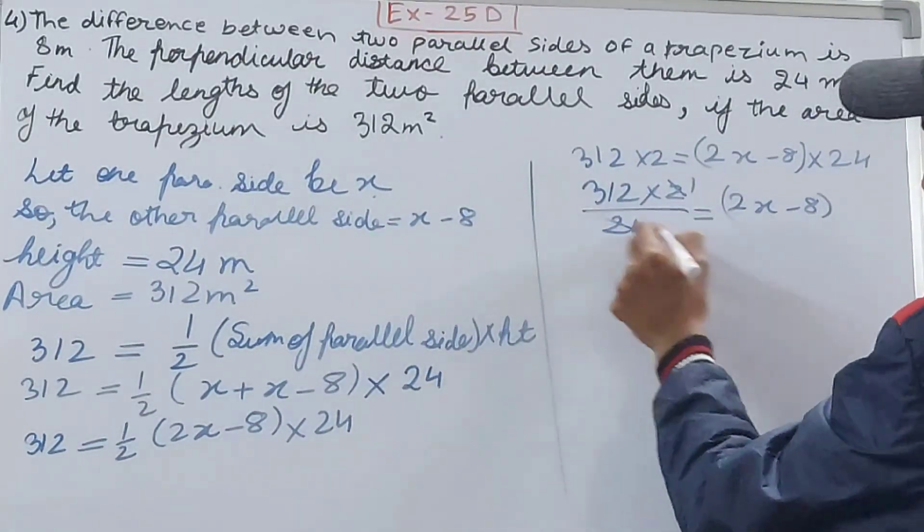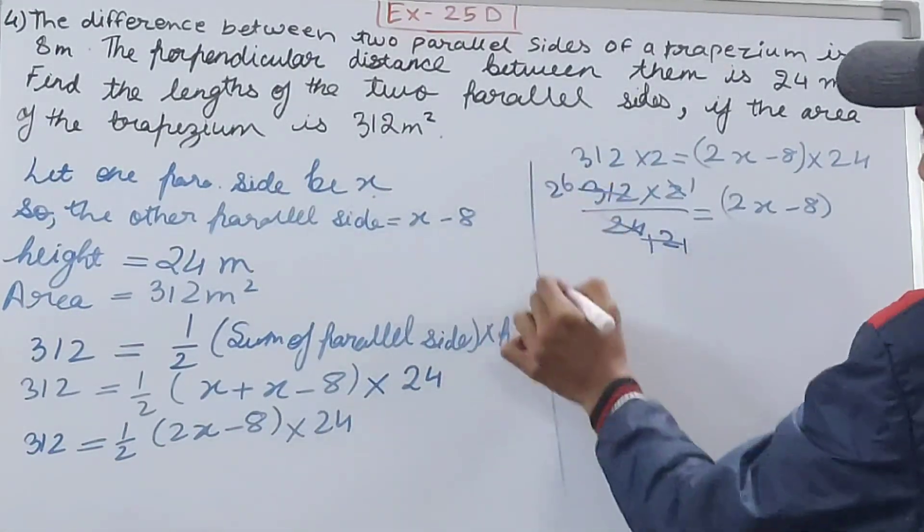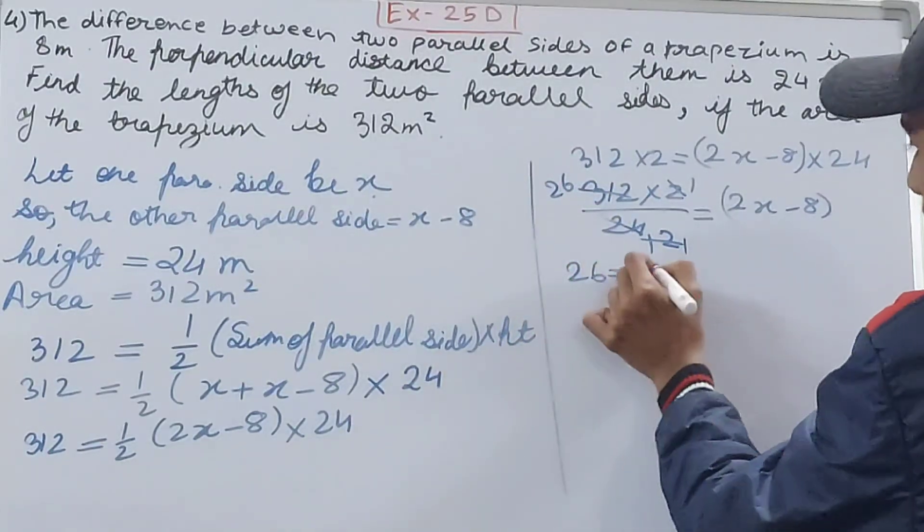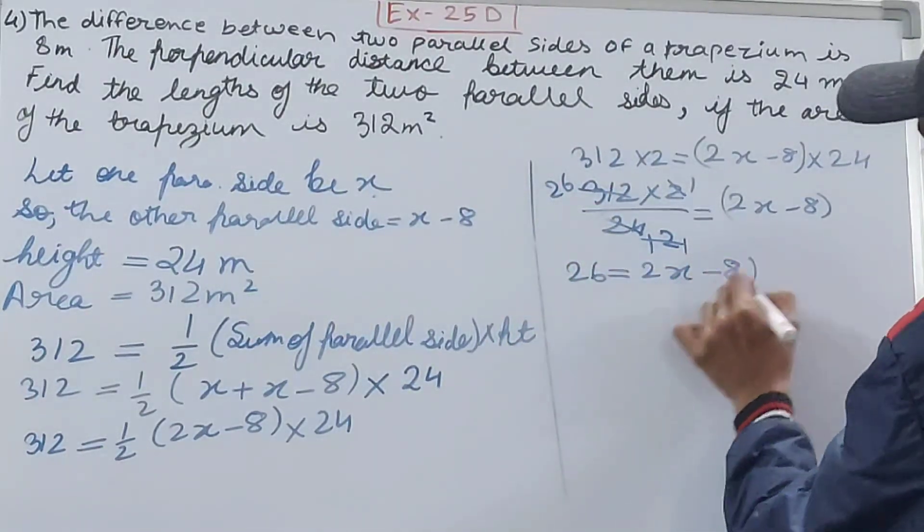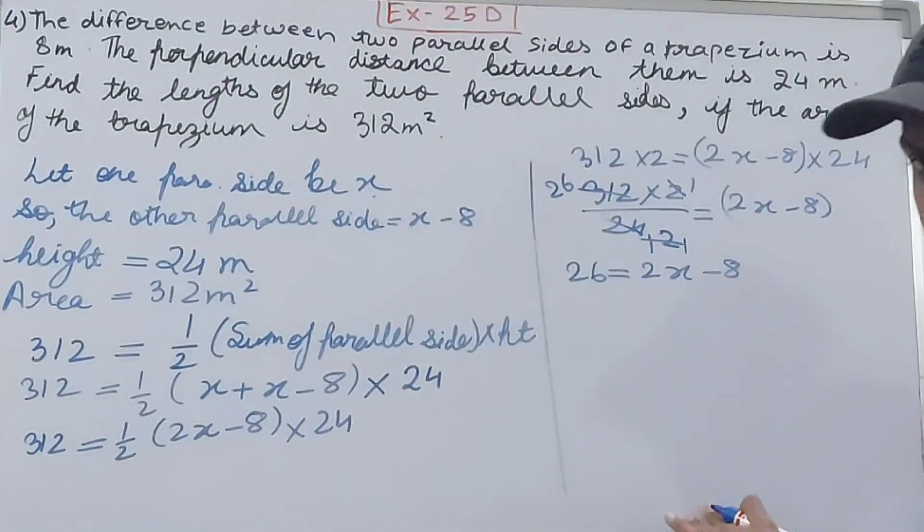I'm canceling by 2. Now I will cancel 312 by 12 - this will go 26 times. So 26 equals 2X minus 8.